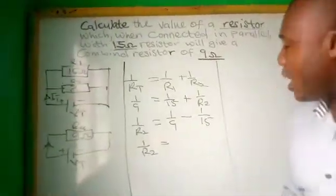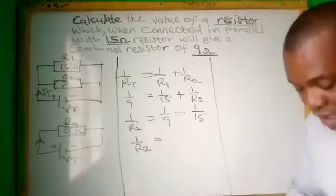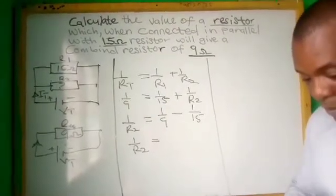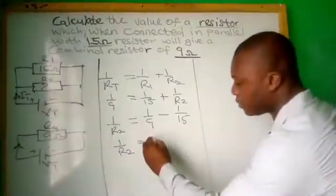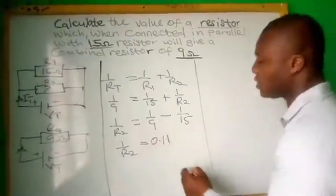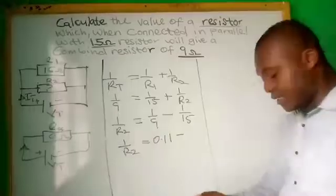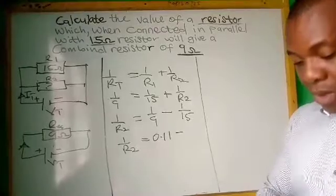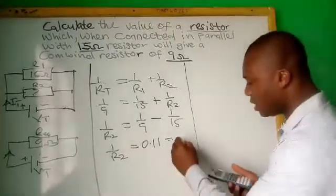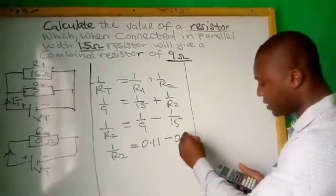So let's see, 1/R2. So 1/9 will give us, 1 divided by 9 will give us 0.11. Minus 1 divided by 15 will give us 0.67.